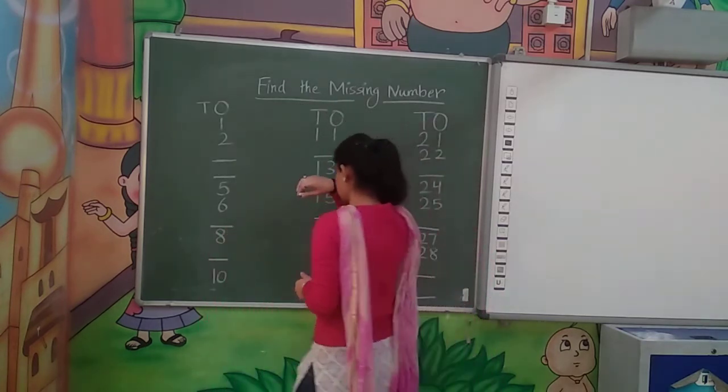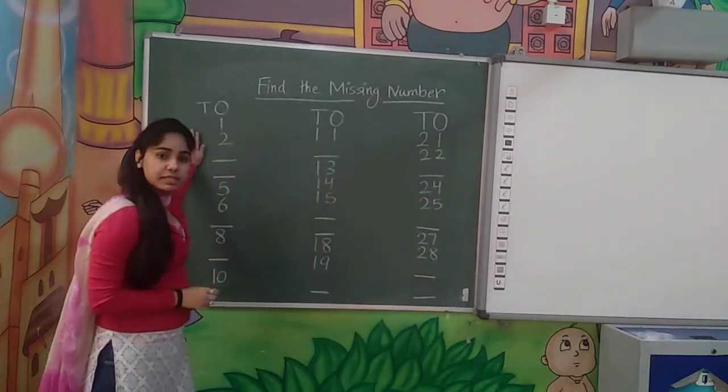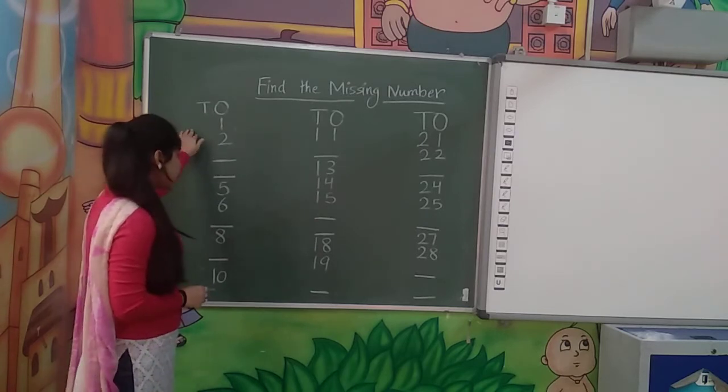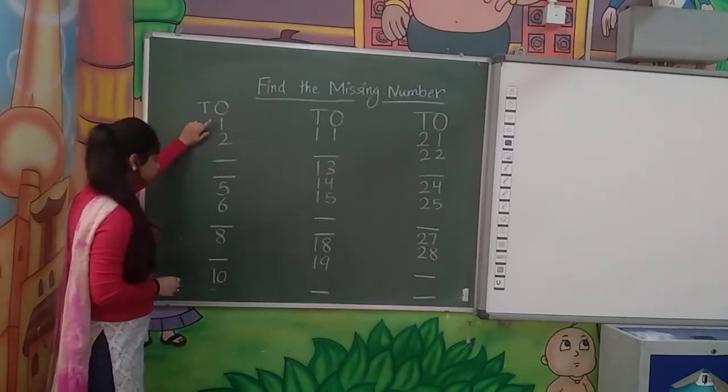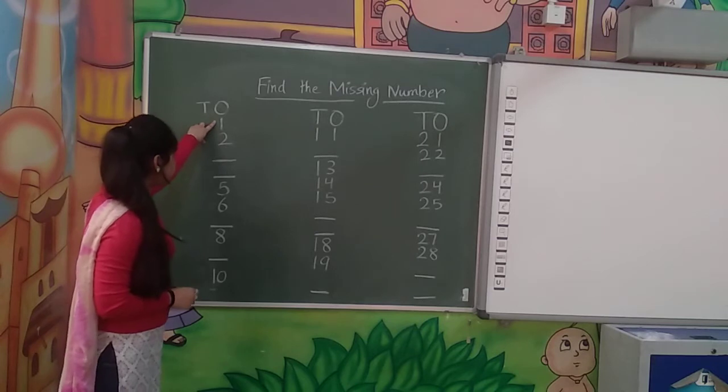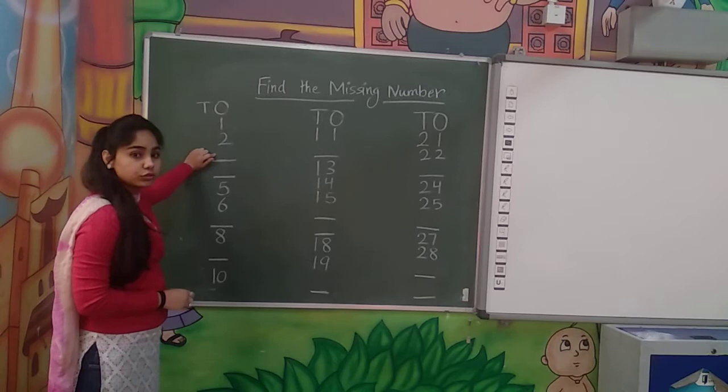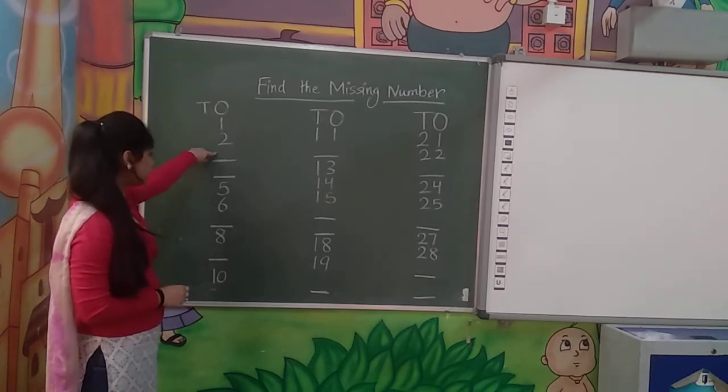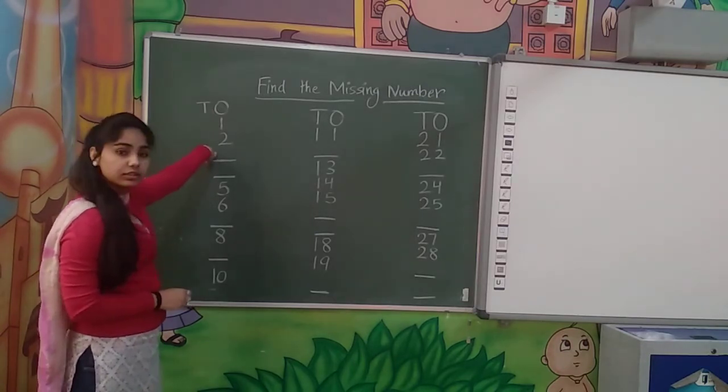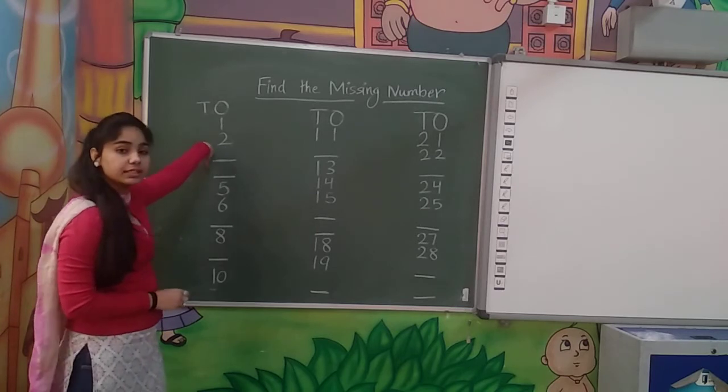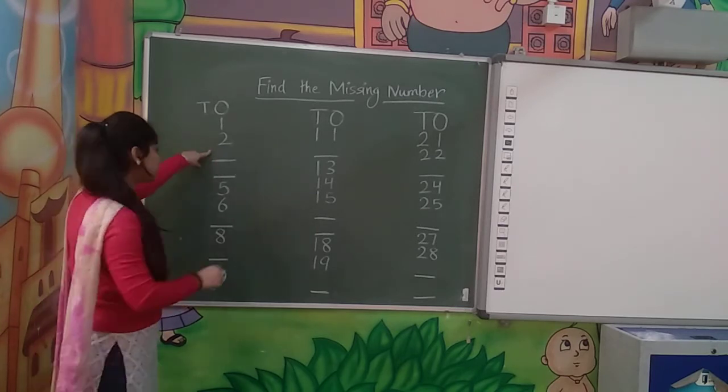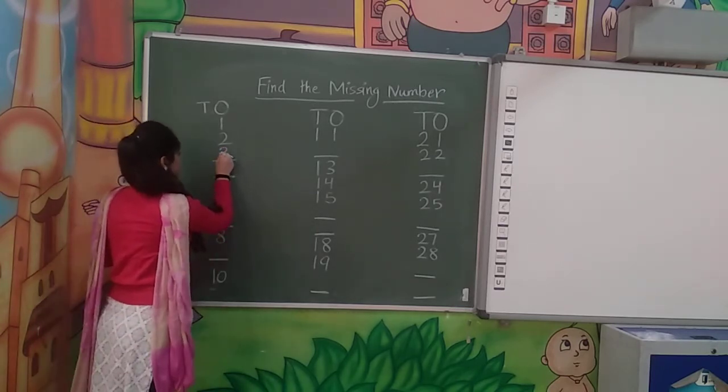So now start. We will find the missing number here and then write it out. Okay. So start counting. 1, 2, 3, 4. We will write it out. 3. Yes.